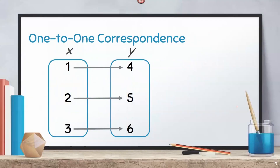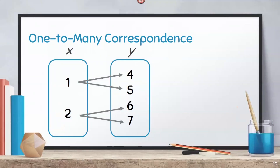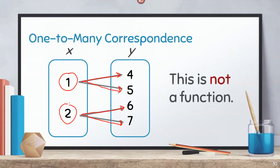Let us go back to the correspondences earlier. In 1-to-1, we can clearly see that each value of x is being paired to only one value of y. Hence, this is a function. As for 1-to-many correspondence, notice that each value of x is paired to multiple values of y. 1 is being paired with 4 and 5, and 2 is also being paired with 6 and 7. Therefore, since x is being paired to more than one value of y, this correspondence is not a function.